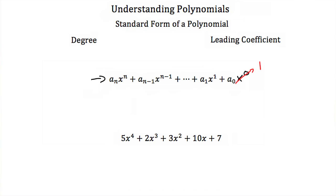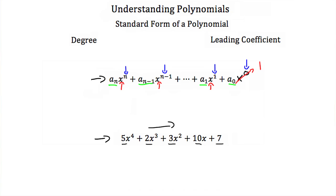This is kind of confusing looking, but if you realize that the a_n terms are all just numbers, and x is our variable, then let's look at the exponents: here we have n, then n minus 1, and this goes all the way down until we have just a 1 and then a 0. So a standard form polynomial is written just like this example: 5x to the fourth plus 2x cubed plus 3x squared plus 10x plus 7. What's important to notice is that the different terms are written with their exponents in descending order. The highest exponent is always written first, then the next highest, and so on.